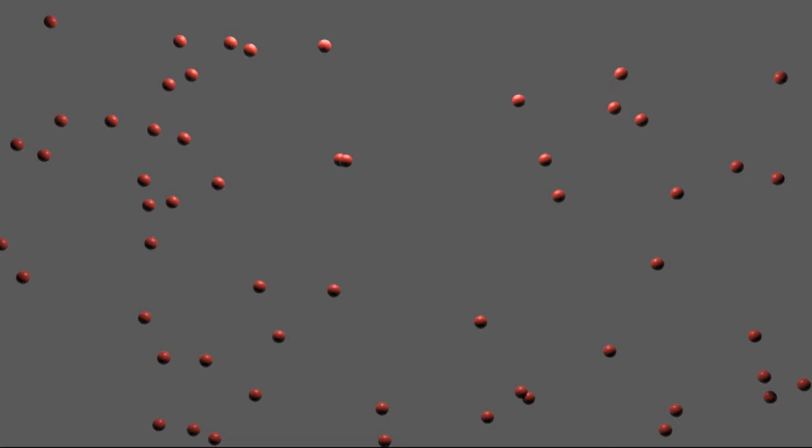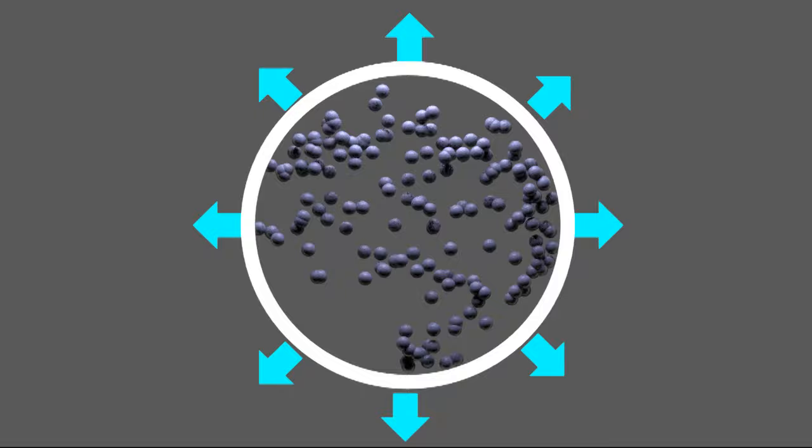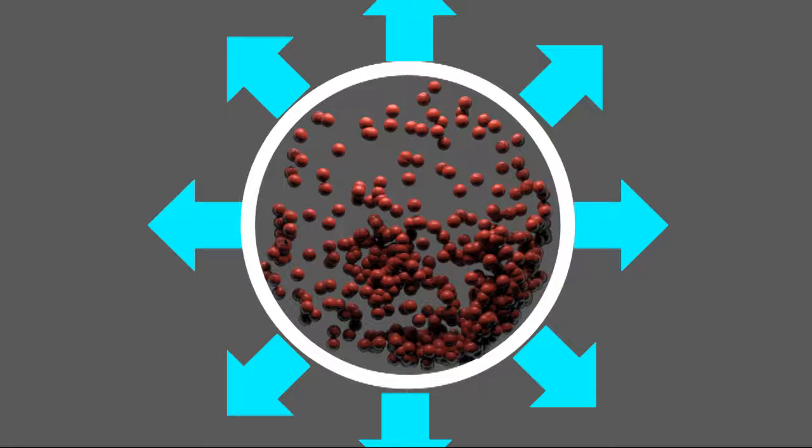If you cram many particles into a tight container, the particles press against the container walls, producing pressure. The pressure depends on the speed of the particles, or in other words, the temperature. It also depends on the number of particles and the volume of the container.